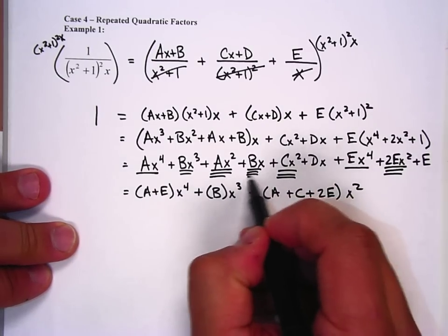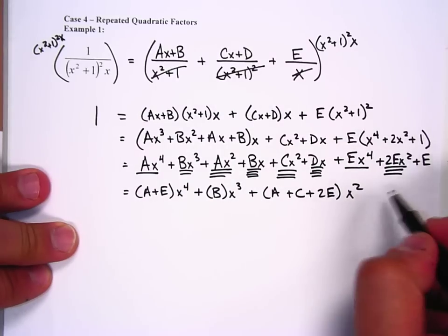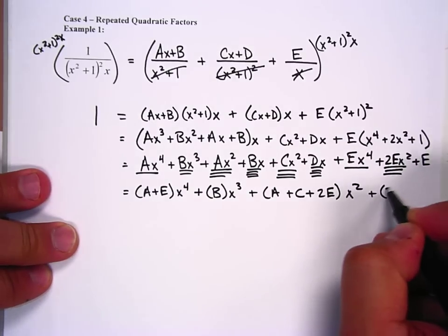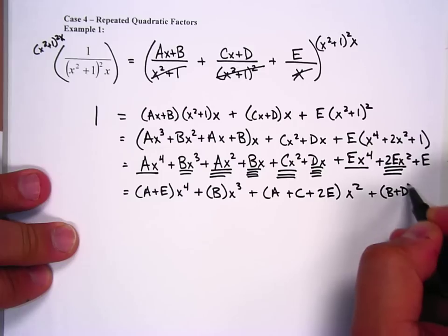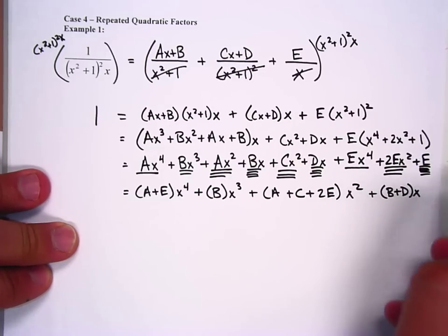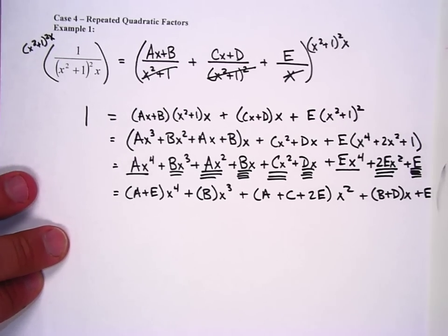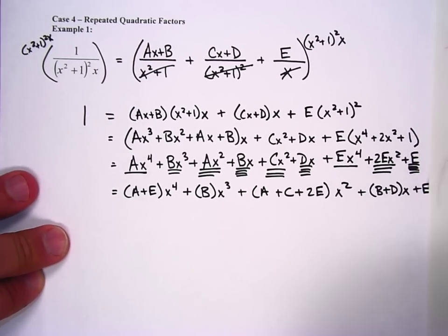I got two terms that are x terms, so I get plus (b plus d)x, and then finally one constant. As I'm drawing off the screen here, so now we've got to set up our equations.